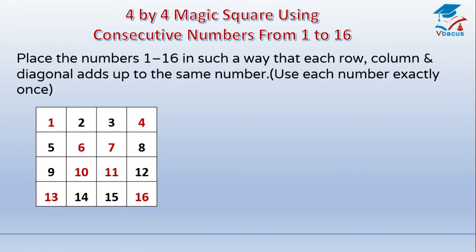We don't have to do anything, just exchange the numbers at corners. Here 16 will be replaced by 1 and 1 will be replaced by 16. Here 13 will be replaced by 4 and 4 will be replaced by 13. Now inside the square, 11 will be replaced by 6 and 6 will be replaced by 11. Here 10 will be replaced by 7 and 7 will be replaced by 10.